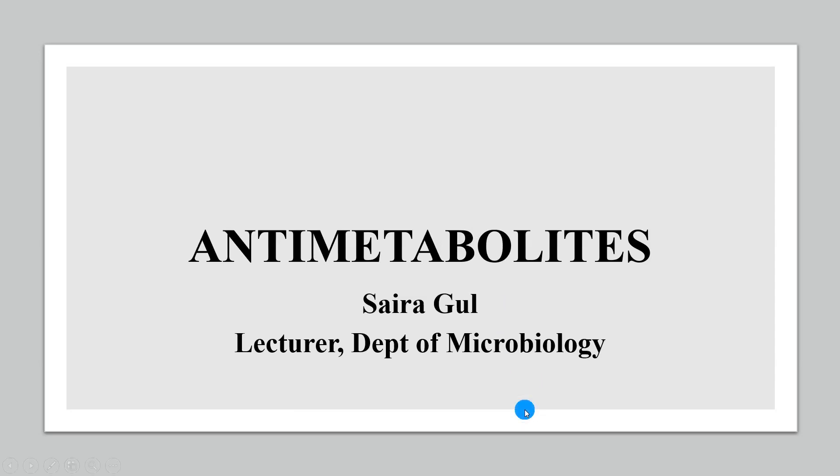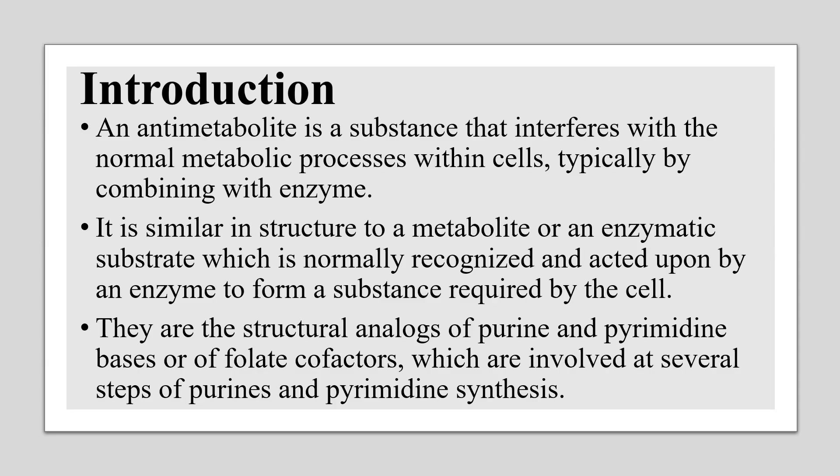Today we're going to talk about the anti-metabolites. An anti-metabolite is a substance which interferes with cells' normal metabolic processes by combining with enzymes. It is structurally similar to a metabolite or an enzymatic substrate upon which an enzyme acts to form a substance required by the cell. Anti-metabolites are structural analogues of purines and pyrimidine bases.